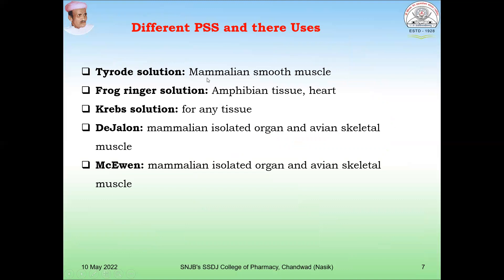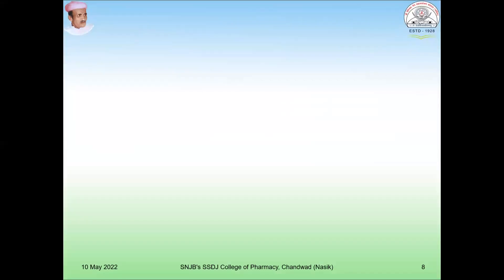Regarding different PSS and their uses: Tyrode solution is used for mammalian smooth muscle preparation. Frog Ringer solution is used for amphibian tissue and heart preparation. Krebs solution can be used for any type of tissue. De Jalon solution is used for mammalian isolated organs and avian skeletal muscles. The exact proportion of PSS is required to obtain maximum responses in bioassay and isolated tissue preparation.